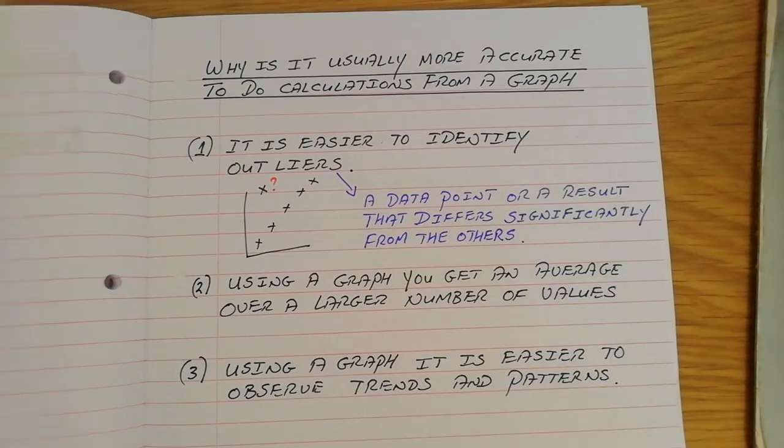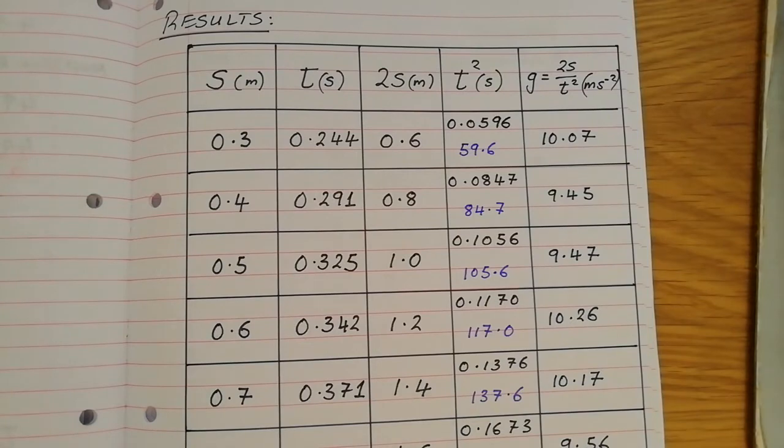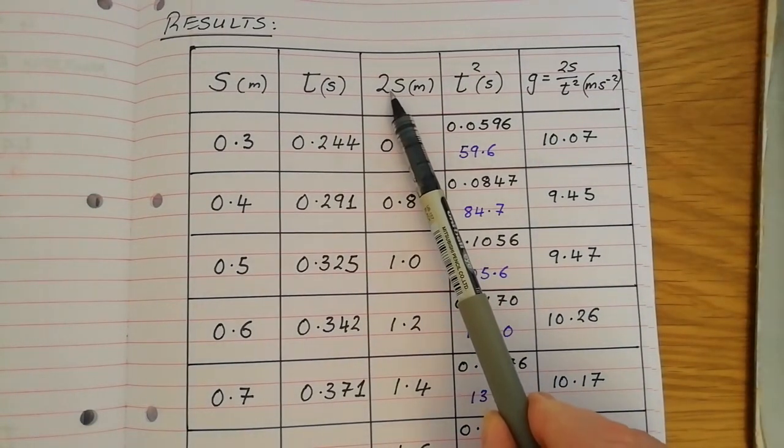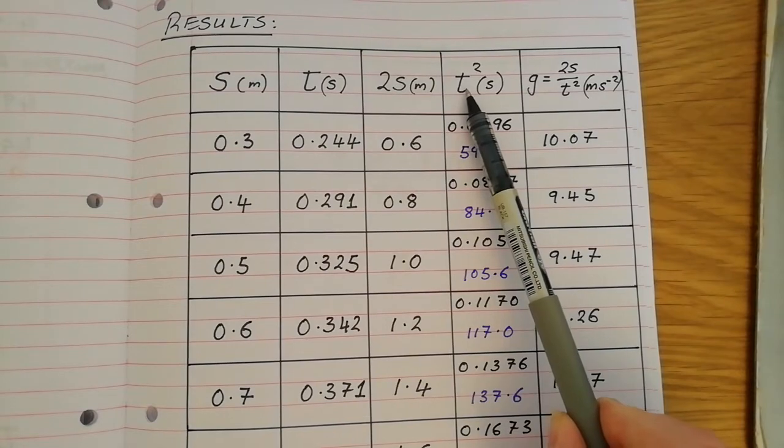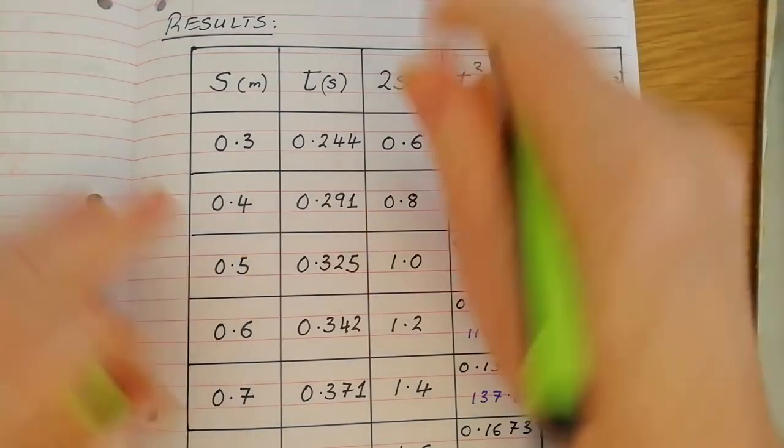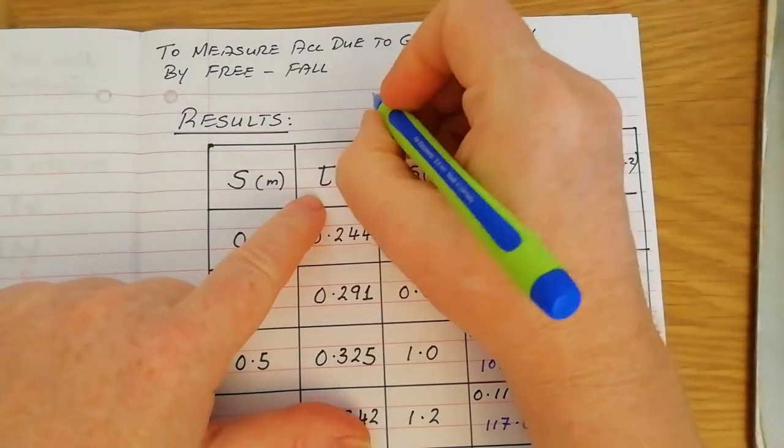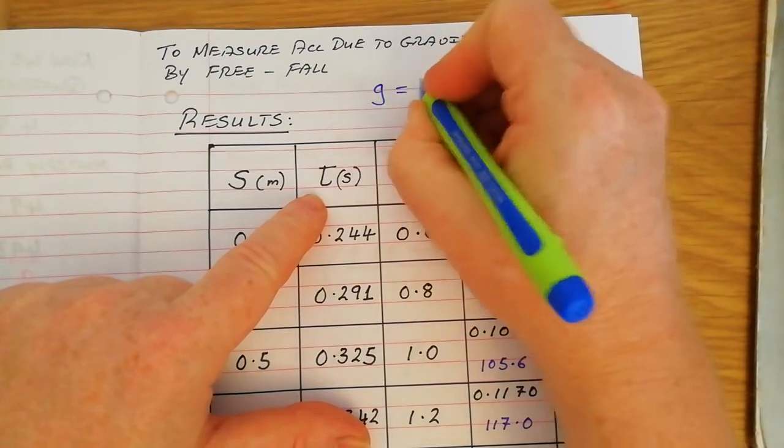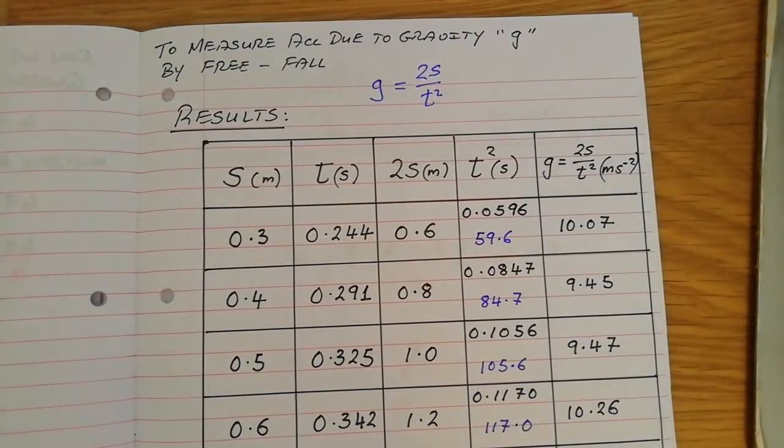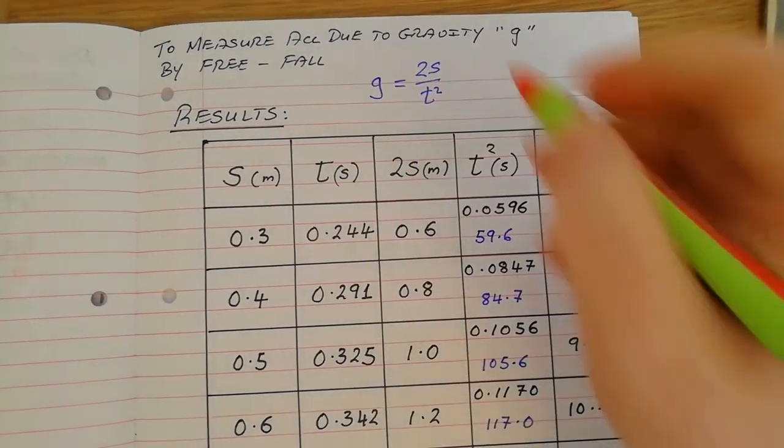And of course, the last thing we're going to do, the last thing I want you to do is actually plot the graph. Now, what you would plot is 2s on the x-axis and t-squared on the y-axis. A lot of people ask me, why do you plot that? Why would you do that? Well, it's very, very simple. If our formula is acceleration due to gravity is 2s over t-squared and we want to plot a graph that allows us to calculate the acceleration due to gravity by using the slope, then have what's on top of the line on the y-axis,